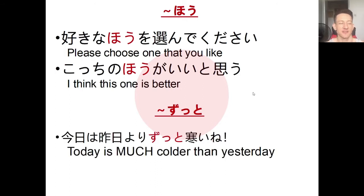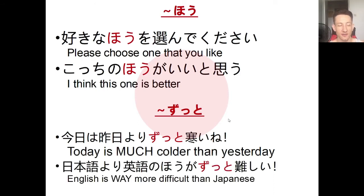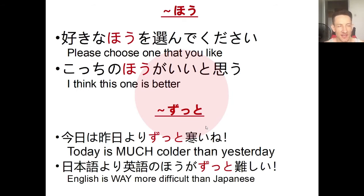We'll also look at zutto, meaning 'much' or 'a lot more.' For example, kyou wa kinou yori zutto samui ne - 'Today is so much colder than yesterday.' You could say kyou wa kinou yori samui ne without zutto, but adding it emphasizes a large difference. Another example: nihongo yori eigo no ho ga zutto muzukashii - 'English is way more difficult than Japanese.' Do you agree? Let me know in the comments!